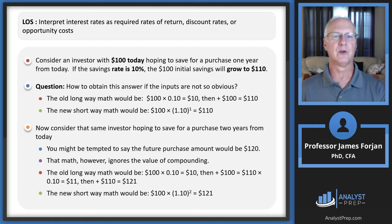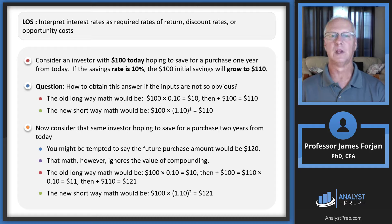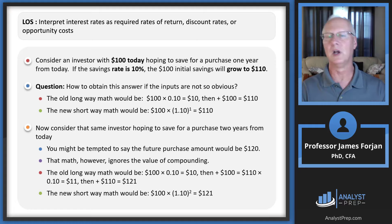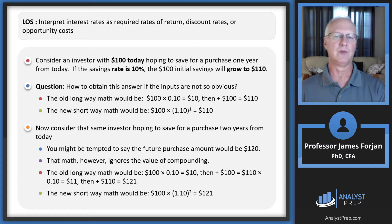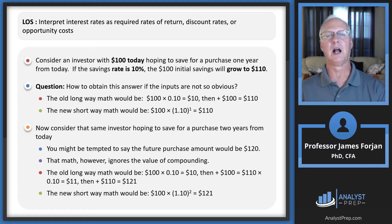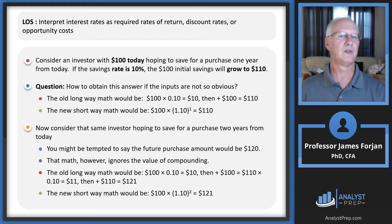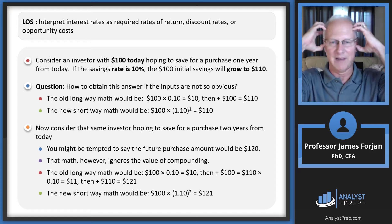Let's consider an investor with $100 today who hopes to purchase an asset one year from now. If the savings rate is 10%, the $100 will grow to $110 — that's obvious. But what if the inputs aren't so simple? Suppose I changed that $100 to $14,862 and the savings rate was 4.3467%. My brain can't figure that out quickly.